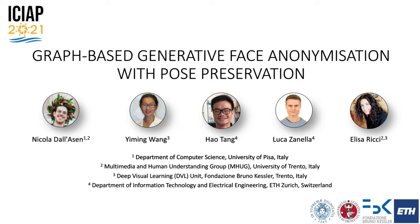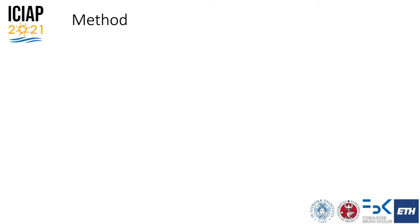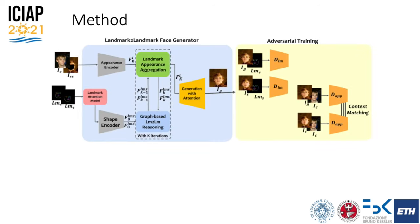Hi, this is Nicola from the University of Pisa and University of Trento, and together with Yiming, Hao, Luke and Elisa, I am here to present our paper "Graph-based Generative Face Anonymization with Pose Preservation." We propose a novel GAN for face anonymization based on graph neural networks to modify the identity of a source face by substituting it with another condition identity, while preserving non-personal attributes such as pose and expression.